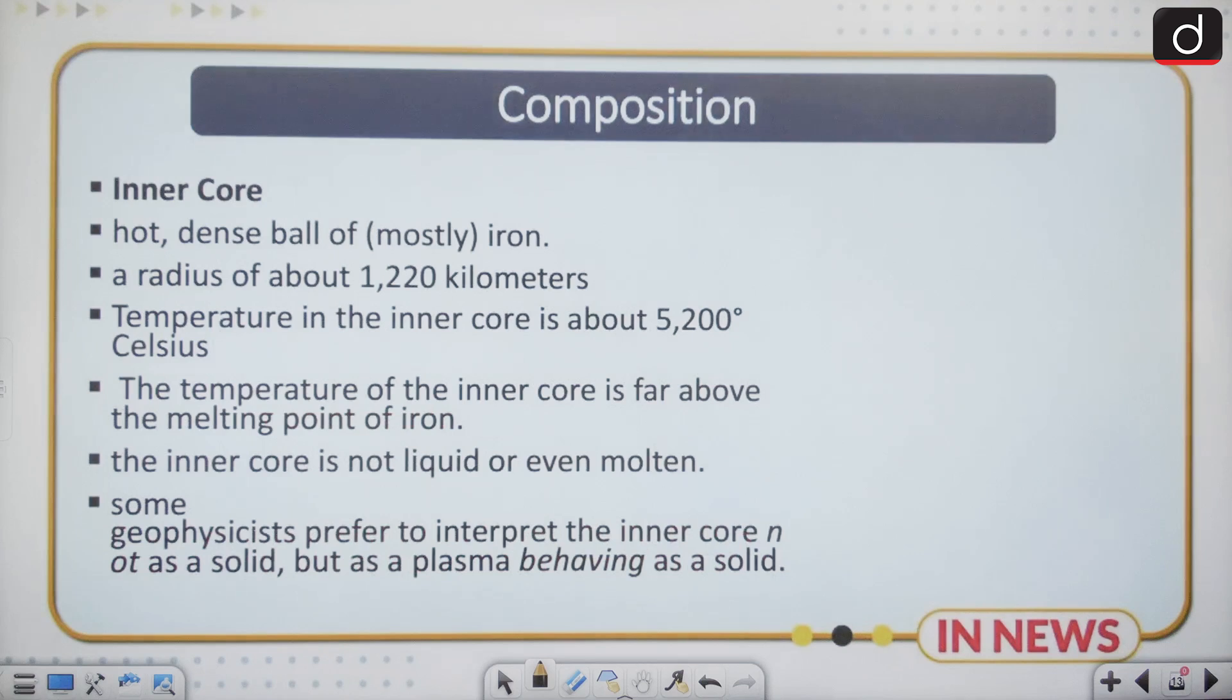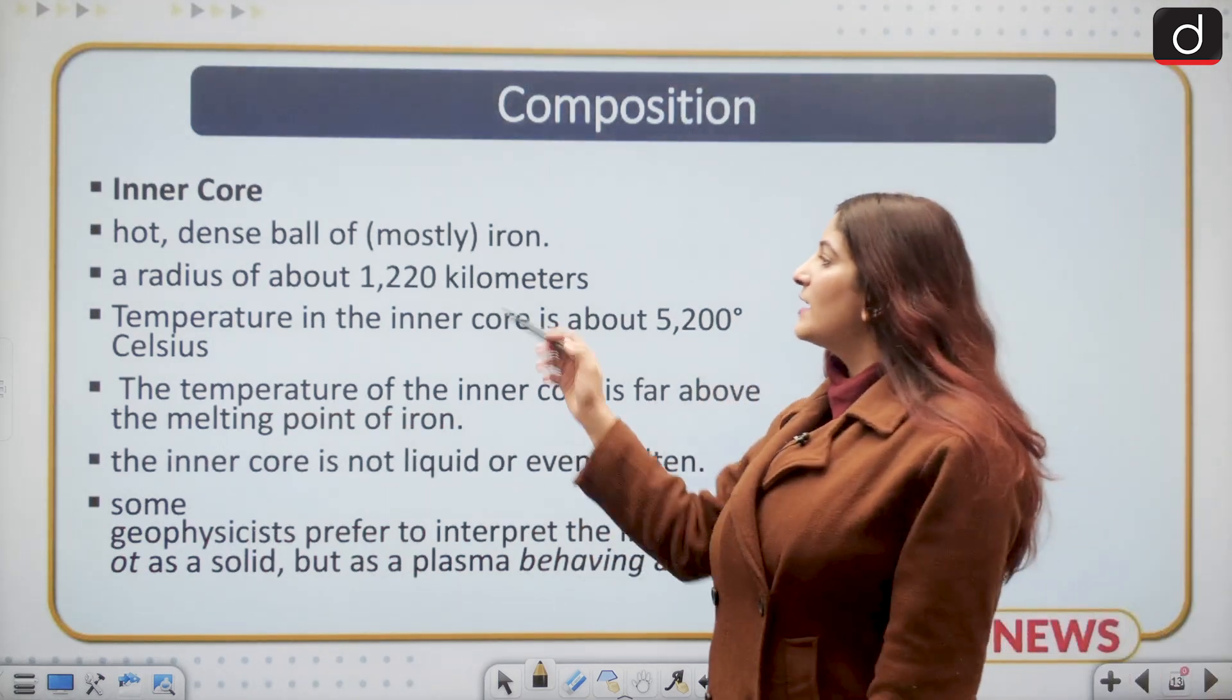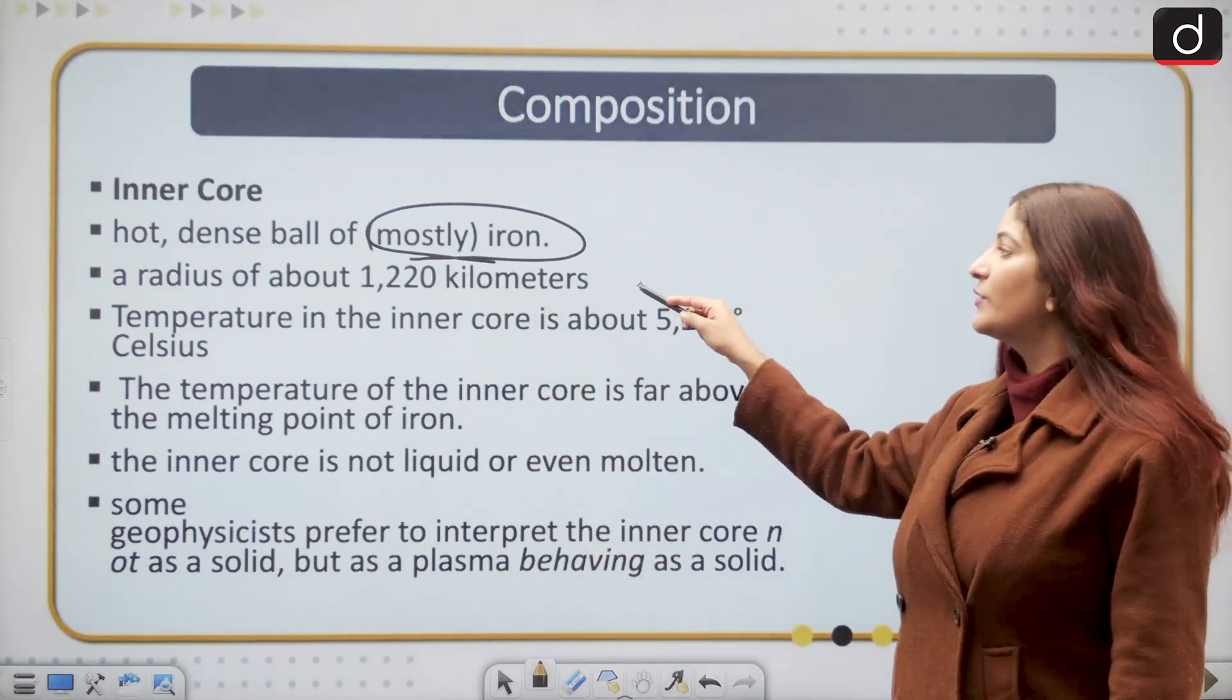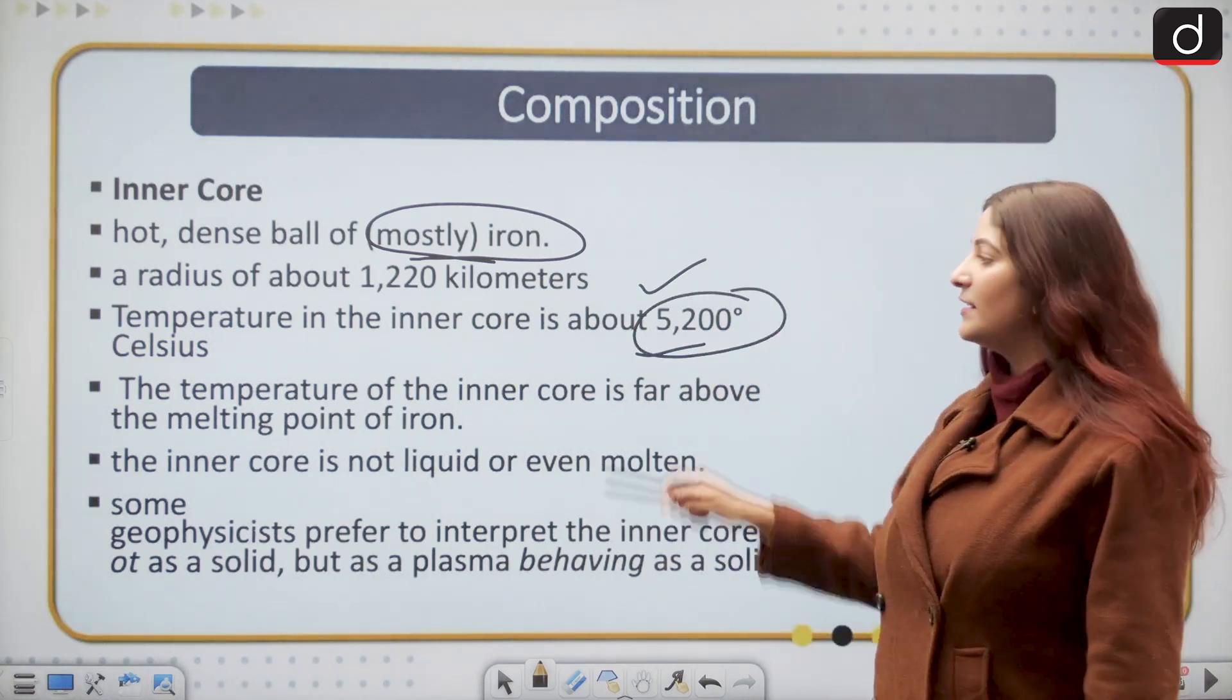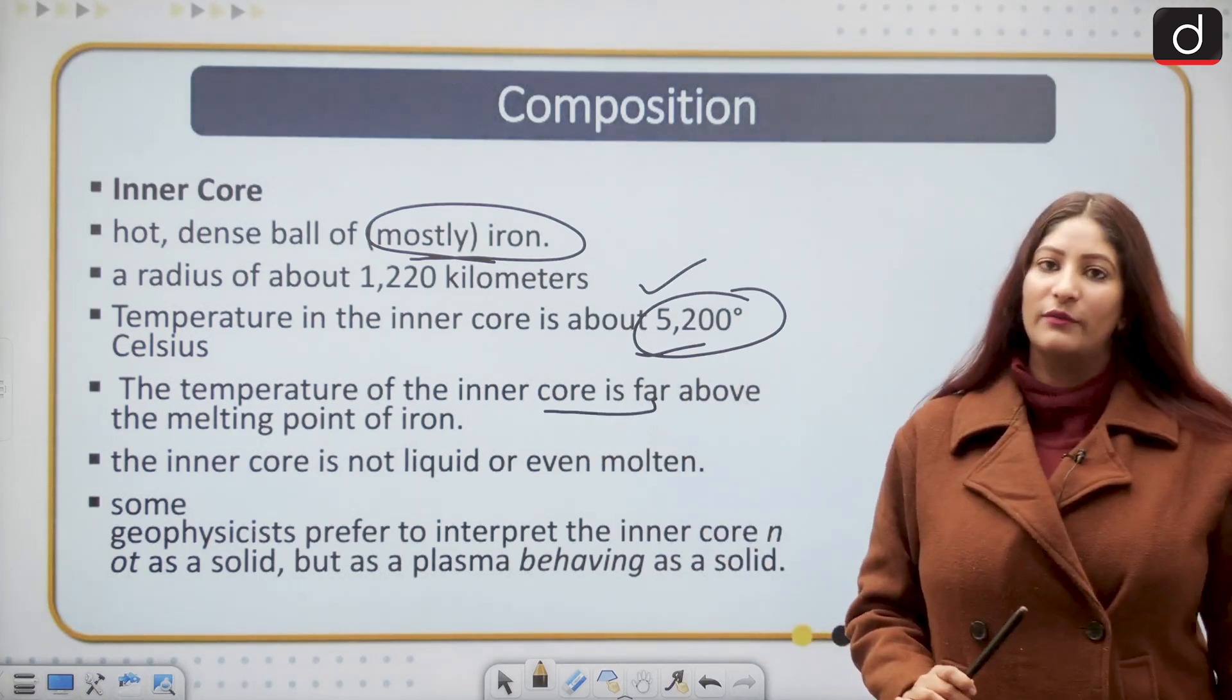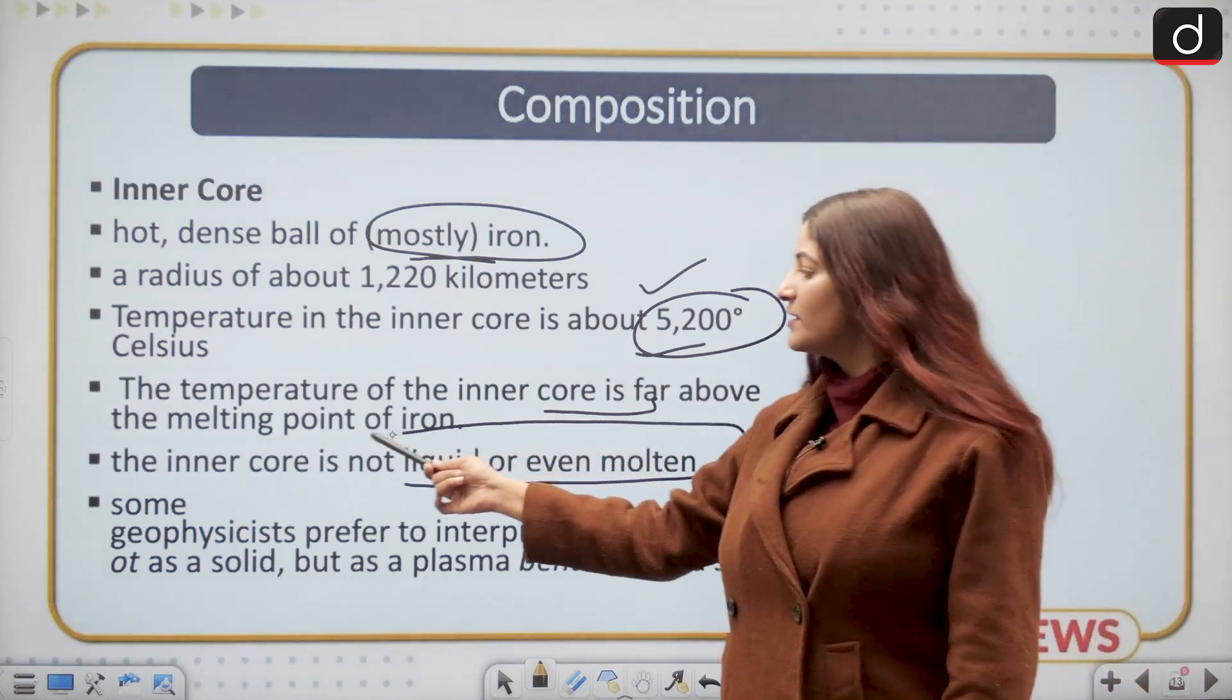Moving ahead, if we talk about the inner core, which is the core in question today, it is the hot dense ball of mostly iron and it has a radius of about 1220 kilometers. Temperature here is 5200 degrees Celsius, far above the melting point of iron. The inner core is not liquid or even molten, it is solid in nature.